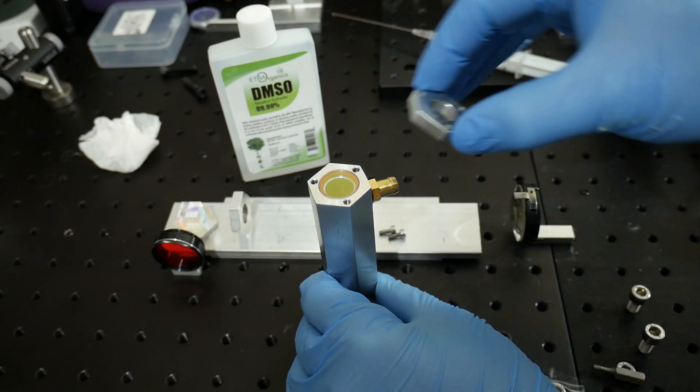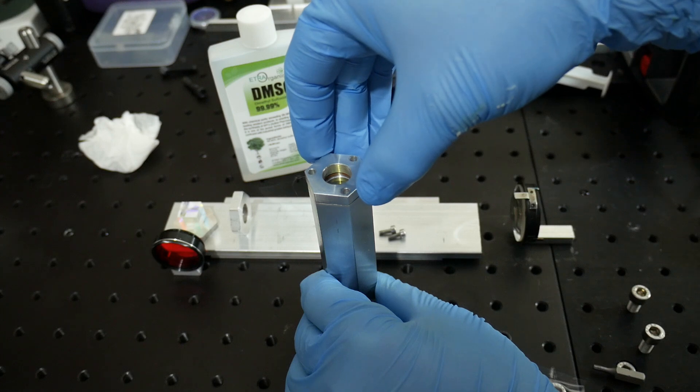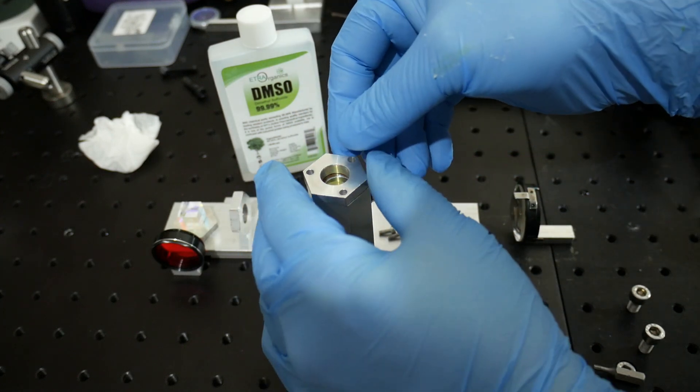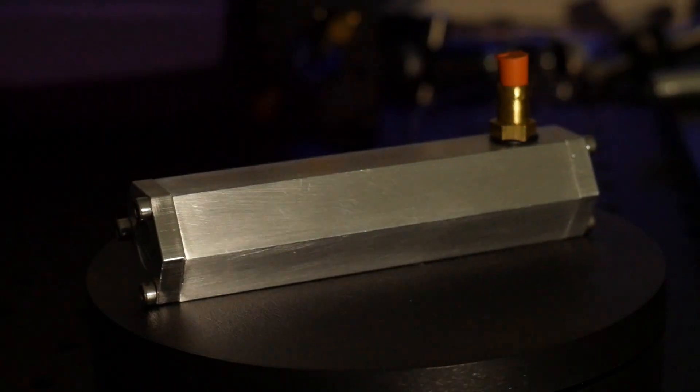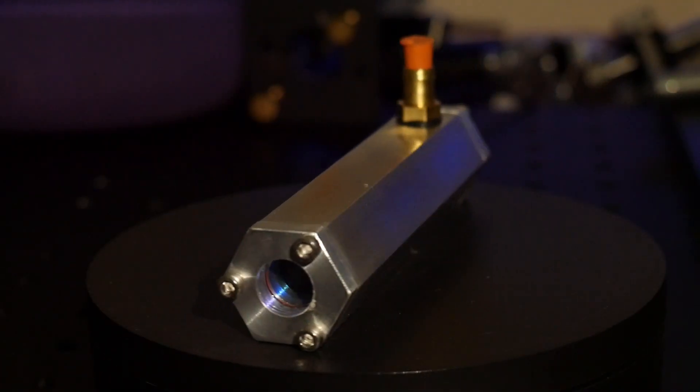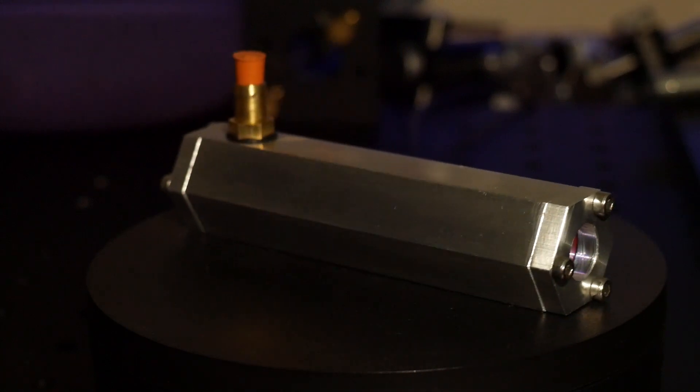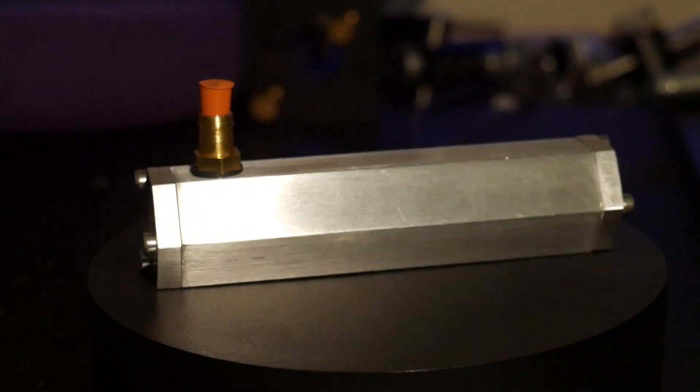The windows are quartz, anti-reflection coated from Aliexpress and at just a dollar a piece are almost disposable. The cell was then filled with dimethyl sulfoxide. And here is the end result.